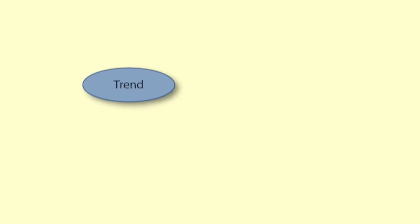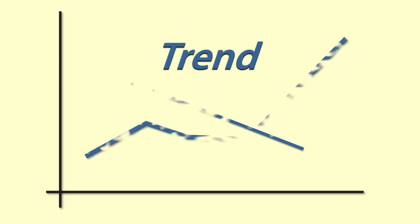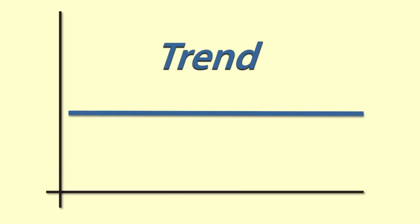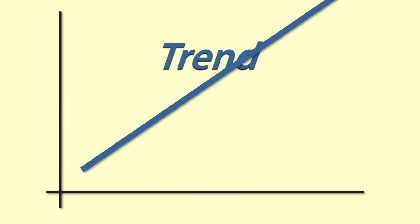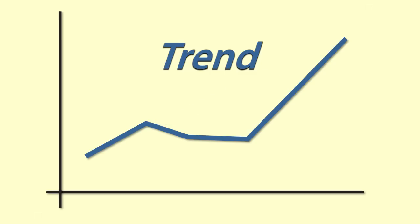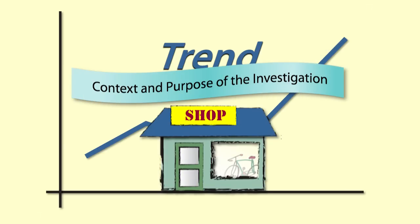Let's start with trend. Describe the shape of the trend. Does it mostly go up or down, or does it change direction? How strong is the trend? What is the overall trend for the series? How does this relate to the context, and what implications are there for the purpose of the investigation?